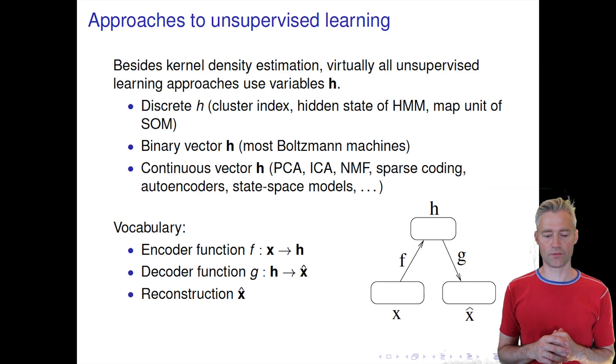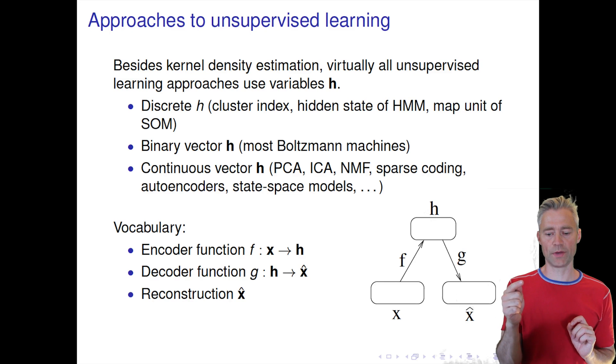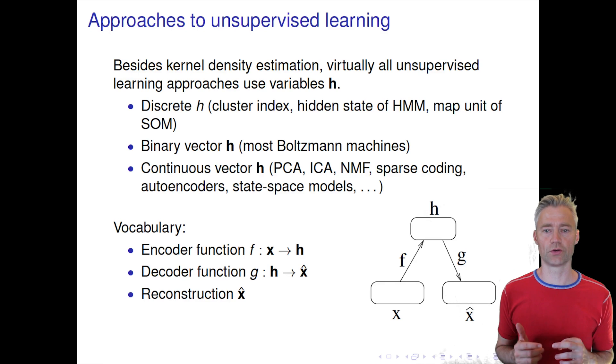You can think about this as a model, a so-called autoencoder, which takes our data x and through a function f maps that to this latent space h. Then we have a mapping from the latent space through a function g back to the original image space. What we achieve here is this x to x-hat mapping. We call x-hat the reconstruction, which shows how well we can represent the original image.